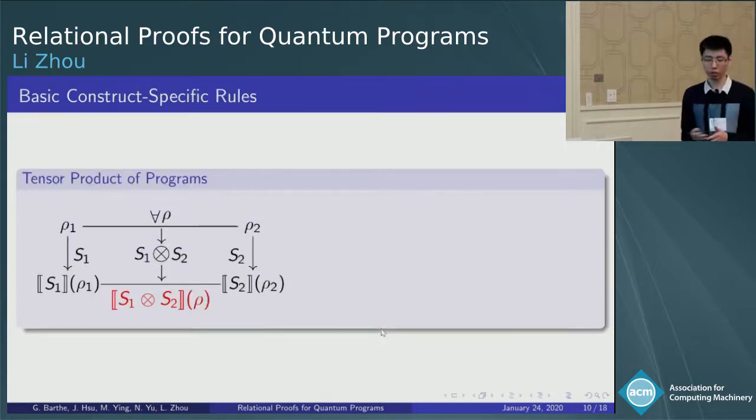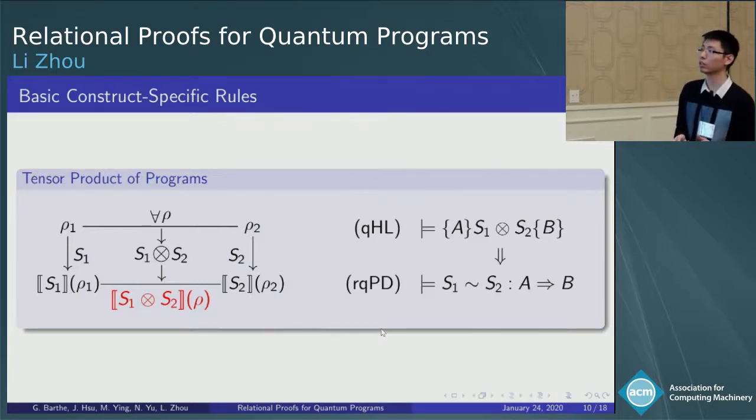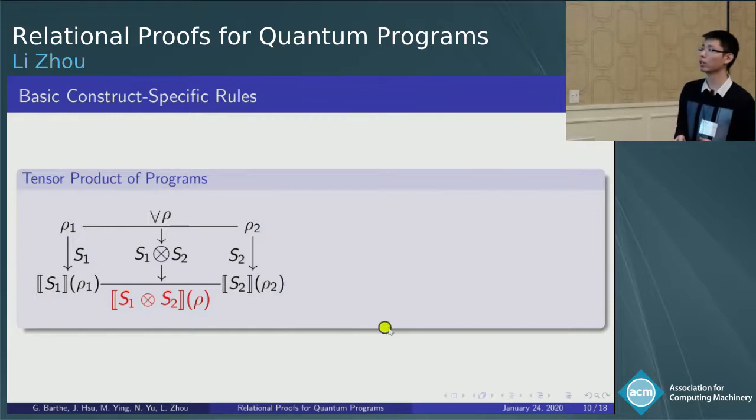Once the interpretation is fixed, the next challenge is to define a set of useful proof rules. The first consideration is to relate two programs in a tensor product manner. See this figure.